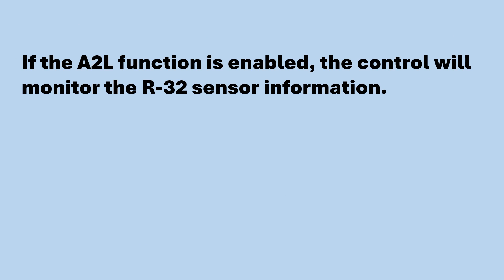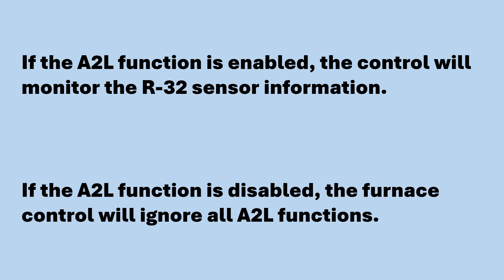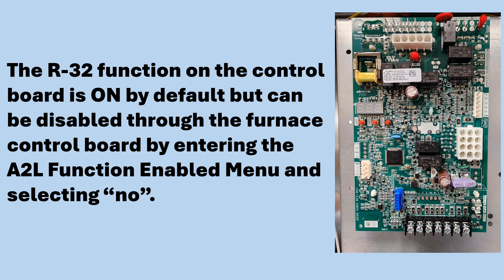If the A2L function is enabled, the control will monitor the R32 sensor information. If the A2L function is disabled, the furnace control will ignore all A2L functions. The R32 function on the control board is on by default, but can be disabled through the furnace control board by entering the A2L function enabled menu and selecting no.